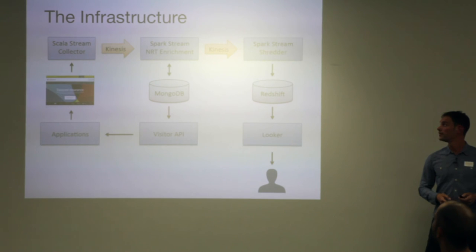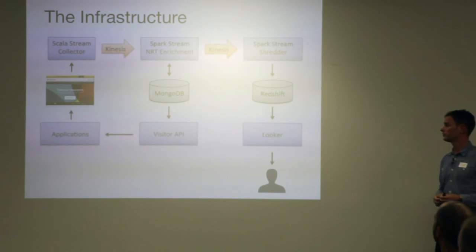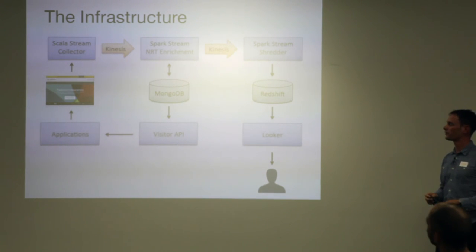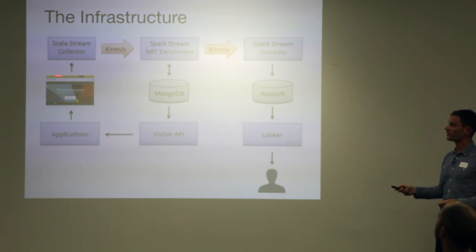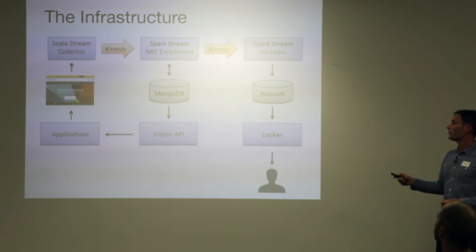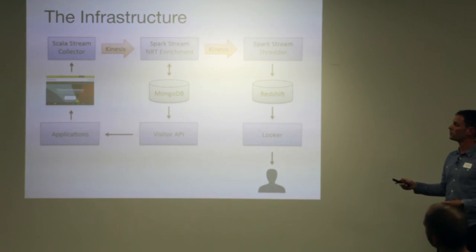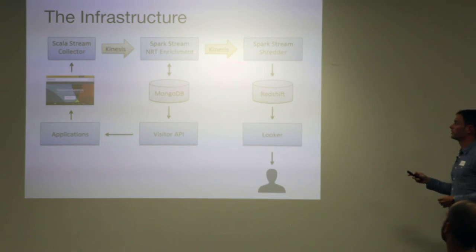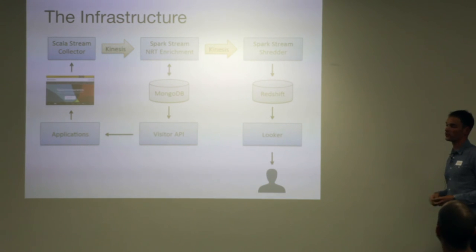So to wrap up — that's the whole event infrastructure. We have applications that fire events, both client-side and server-side. Then we have the NRT enrichment that stores some data in Mongo to provide feedback to the transactional applications. But we also have a branch that stores data into Redshift to be used by everyone using Looker.